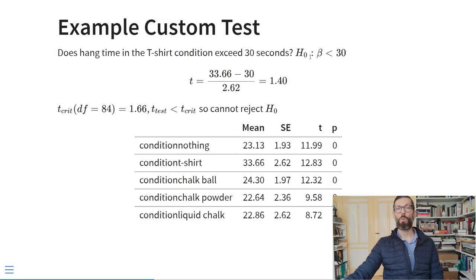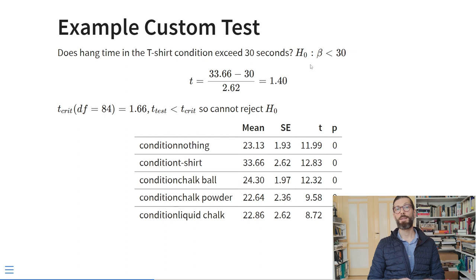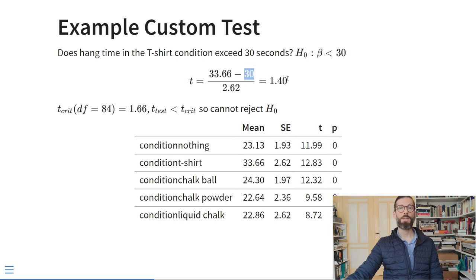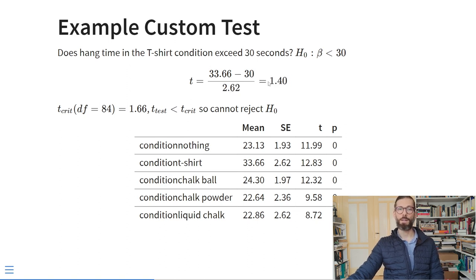Here is example output from the same model with ANOVA specification. We get the mean for every group, and the first mean matches the intercept from our previous regression. For example, assume the gym record is 30 seconds. We can test whether hang time in the t-shirt condition exceeds 30 seconds. This is a one-sided hypothesis: the null is that the parameter is smaller than 30, and the alternative is that hang time is equal to or larger than 30.